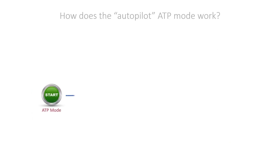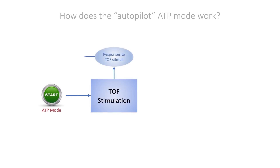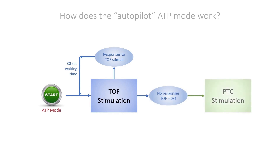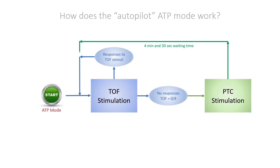The TOF scan pilots the choice of TOF or PTC according to the patient's response. A TOF will be applied every 30 seconds as long as the TOF count has one answer. When there are no more answers to the TOF count, the PTC will automatically start. 4 minutes and 30 seconds later a new TOF will be delivered, and if there are no responses — for example a TOF count of 0 — a PTC will start. This will continue until the TOF responses are back, then the device will only do the TOF every 30 seconds.